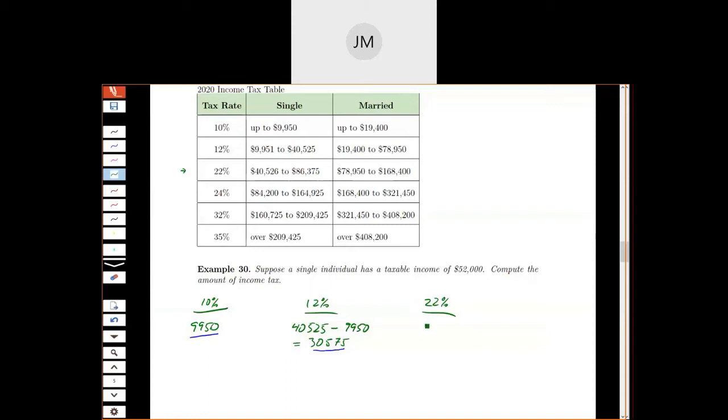So what we're going to do is we're going to take our income, $52,000, and subtract the $40,525. So we get $11,475 that gets taxed at that 22% rate.